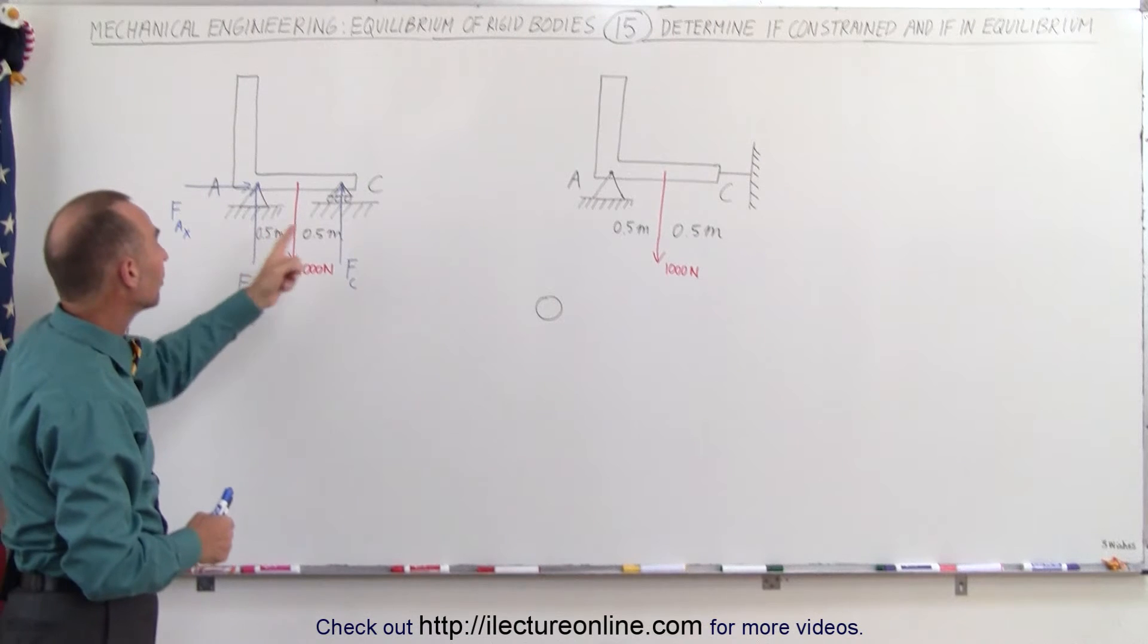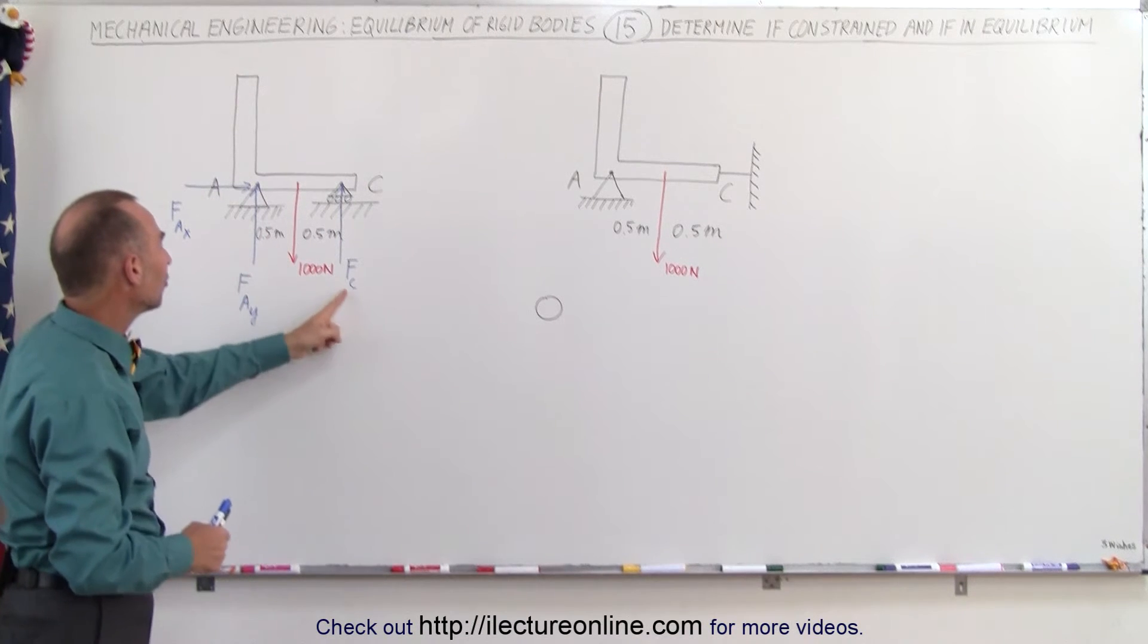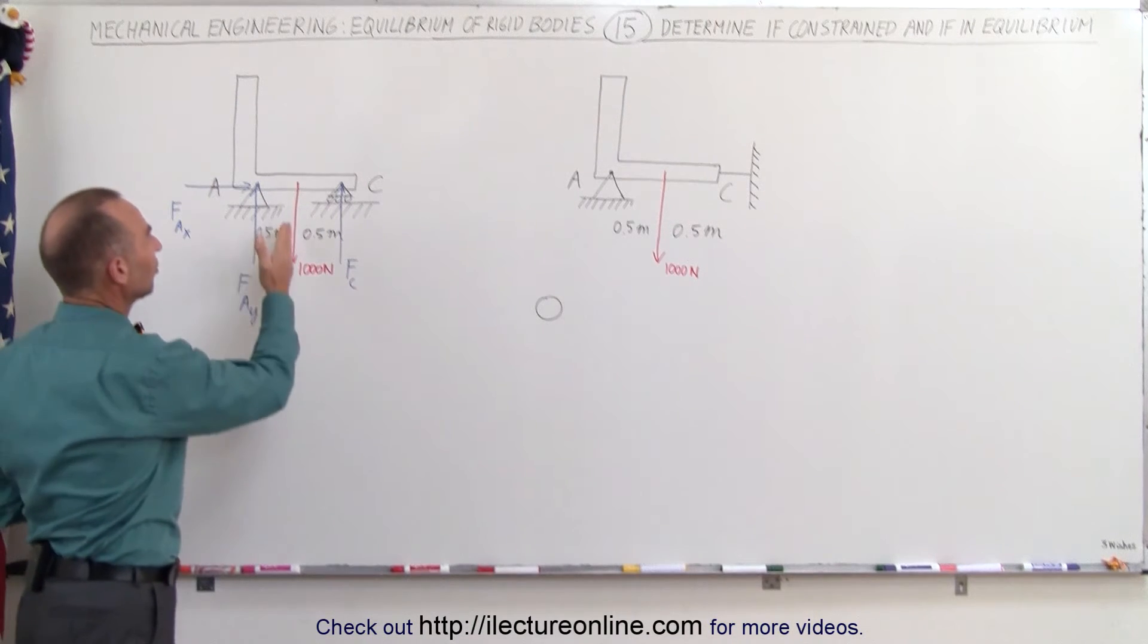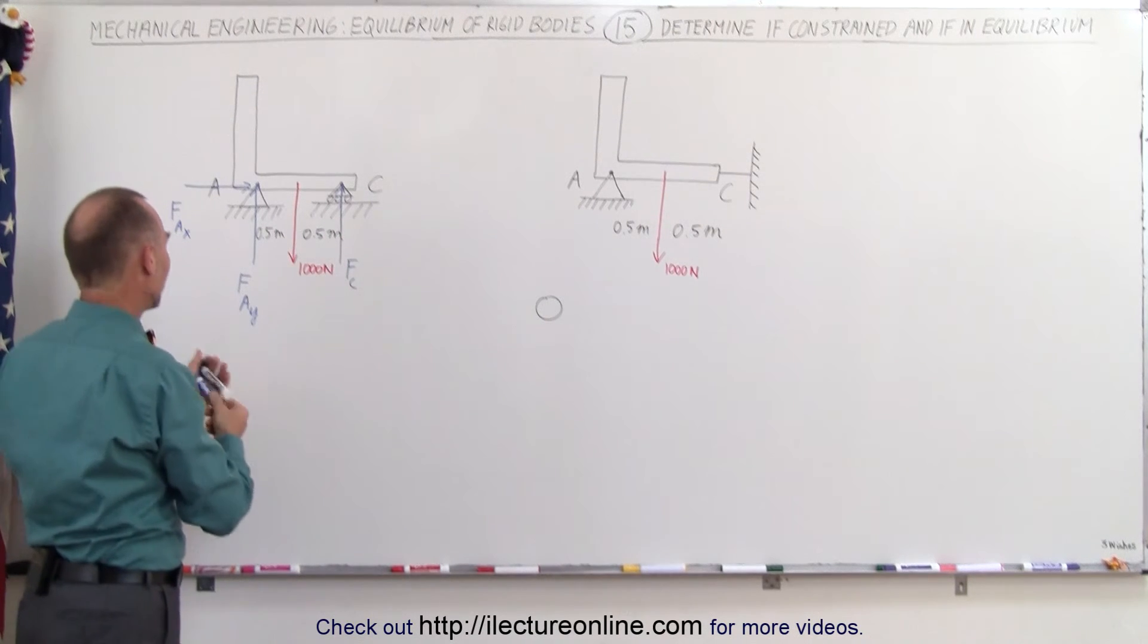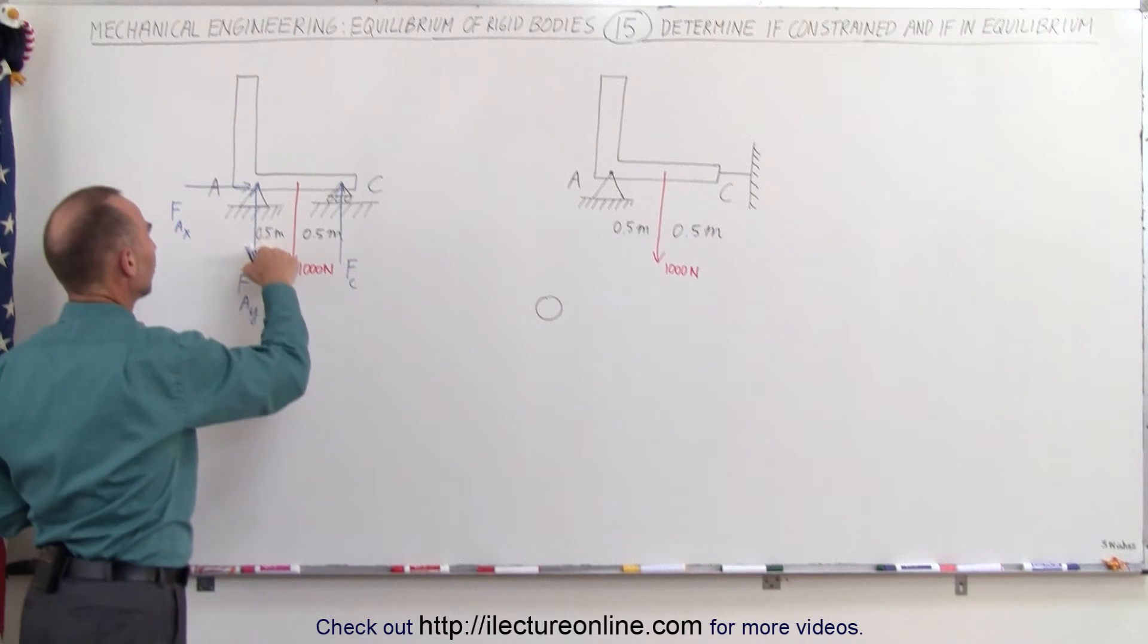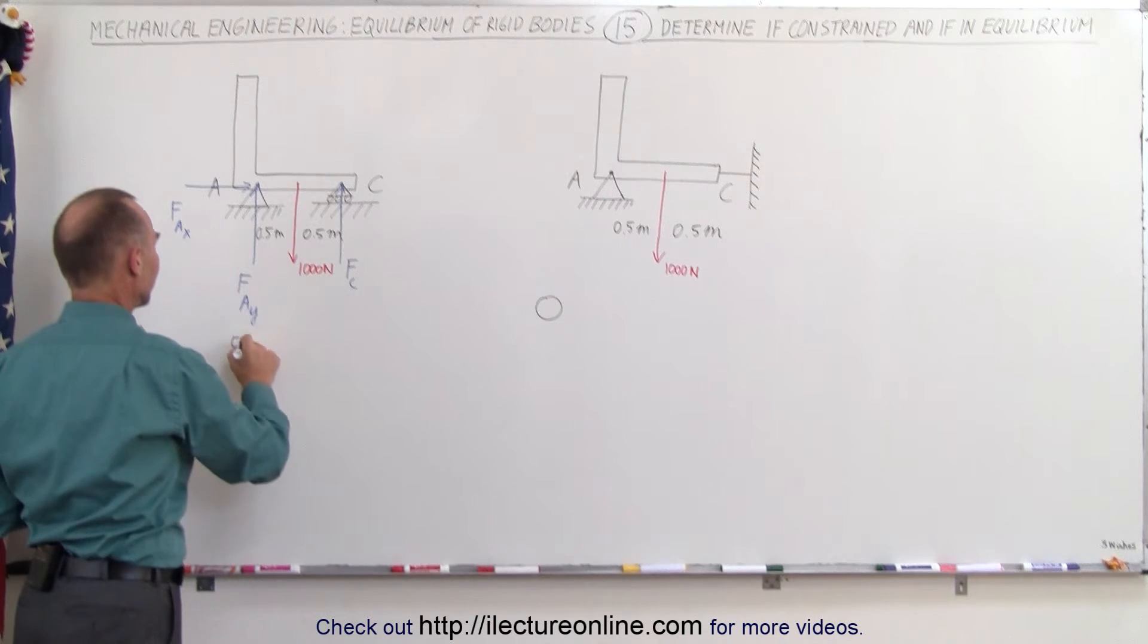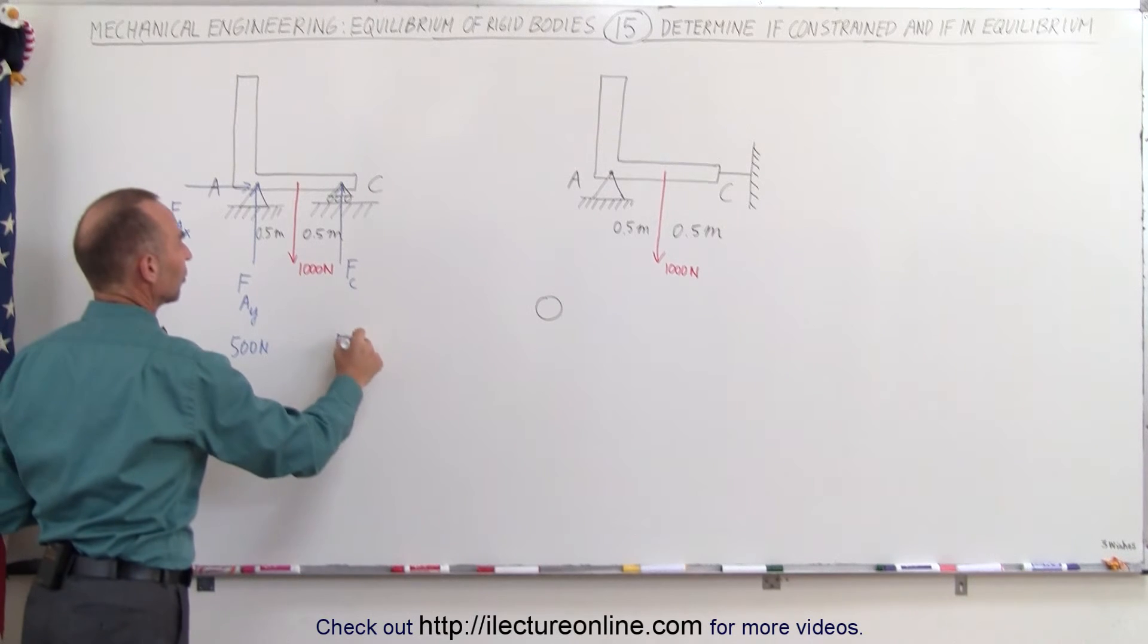Now to calculate the forces on A and C in the vertical direction, notice that this is exactly at the halfway point. That means each of these carry half the weight, so the magnitude of this force in the y direction would be 500 newtons, and the magnitude at C in the vertical direction would be 500 newtons.